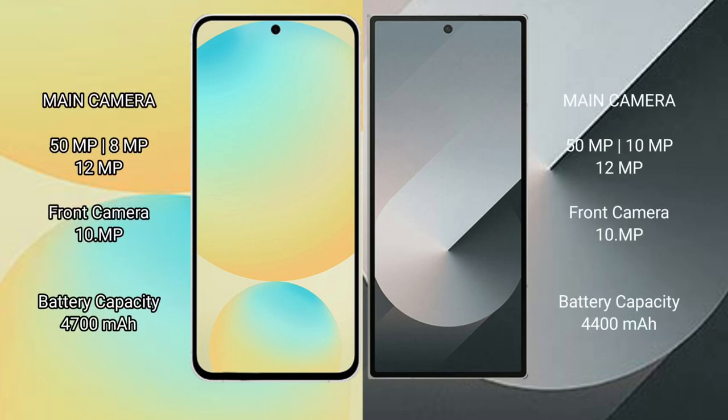The Samsung Galaxy S24 FE features a rear triple camera setup with a 50MP main, 8MP ultrawide, and 12MP telephoto lens, plus a 10MP front camera. It has a 4700mAh battery with 25W fast charging support. The Samsung Galaxy Z Fold 6 has a 4400mAh battery with 25W fast charging support.